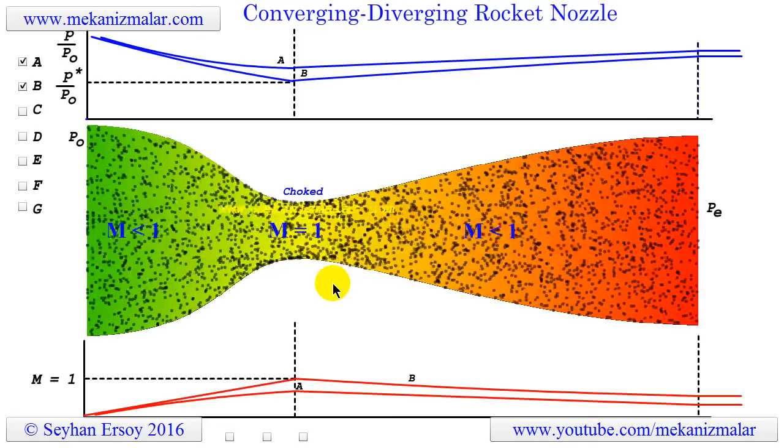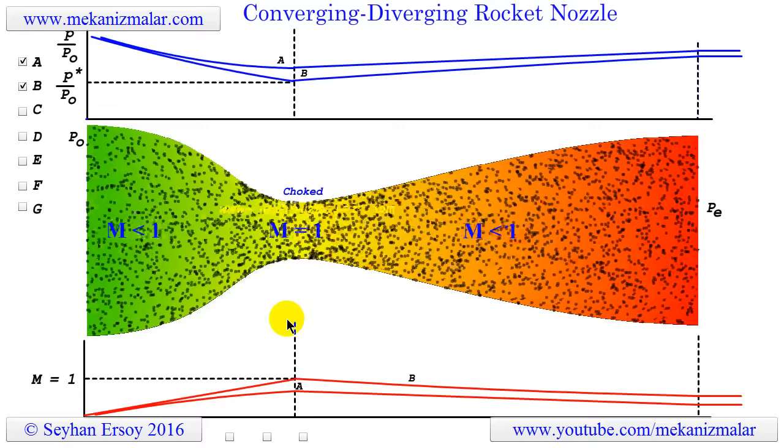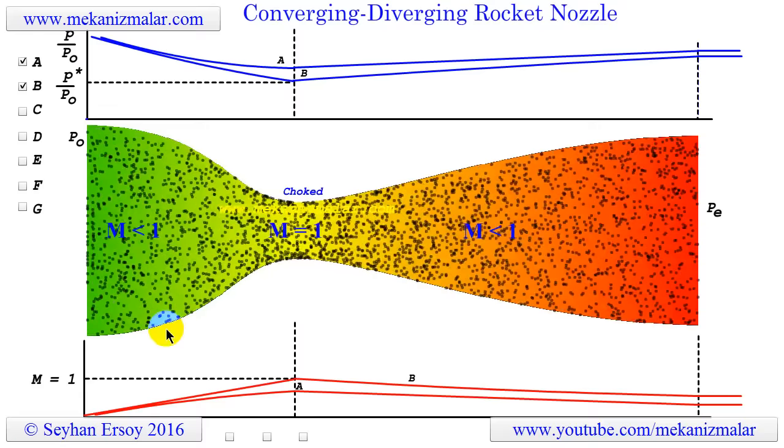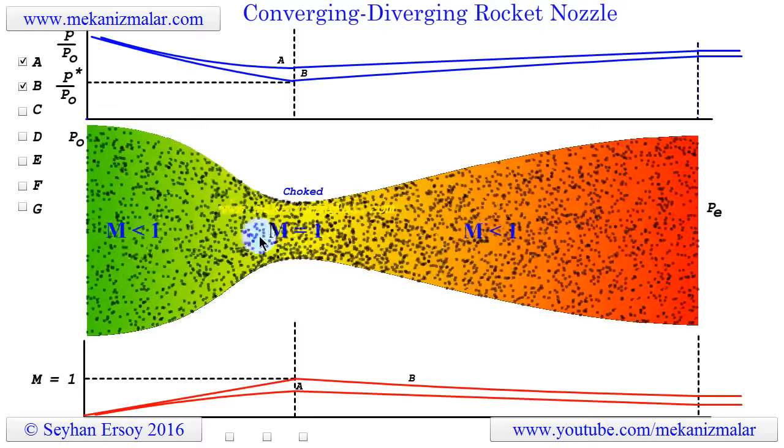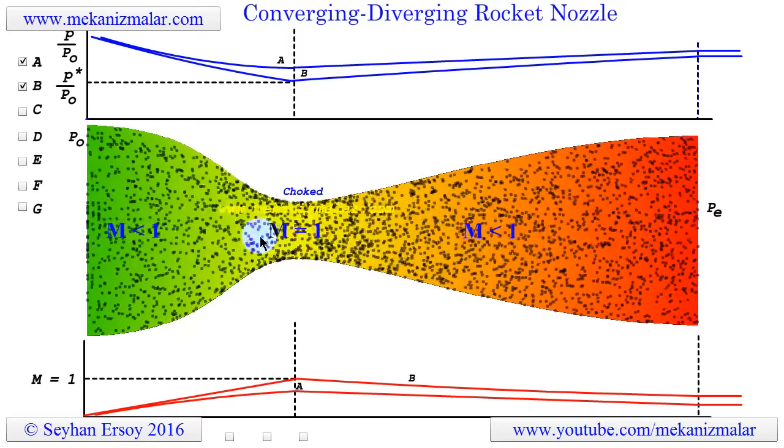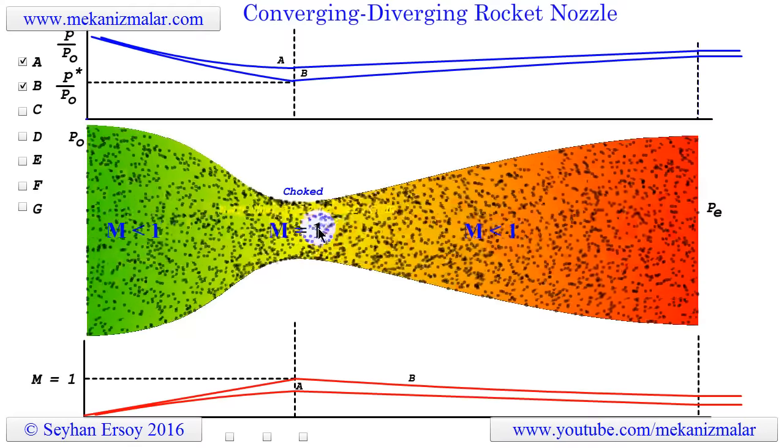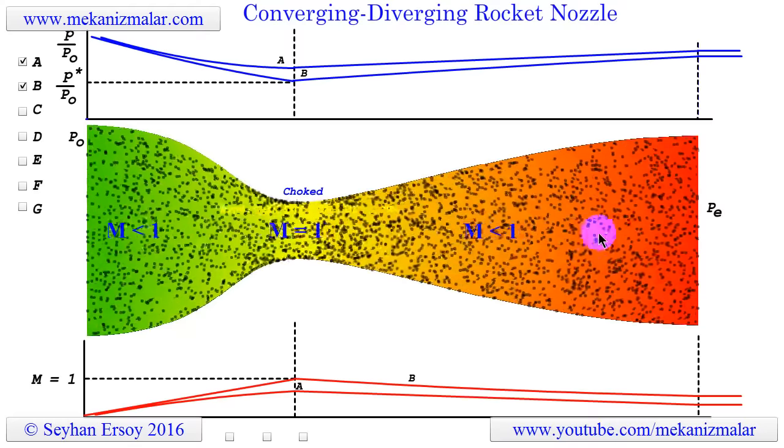Other than the flow being choked, the flow still behaves similarly to the Venturi tube. Toward the throat, the flow velocity will increase. It will reach Mach 1, and the flow speed will be decreased or will be subsonic after the throat.